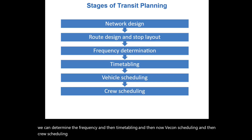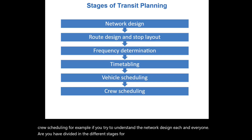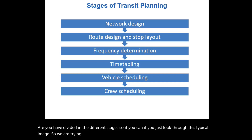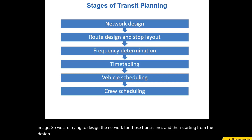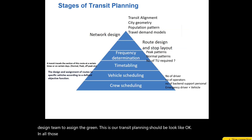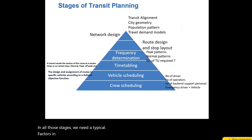For example, if you try to understand the network design, I have divided each stage into different sub-stages. If you look at this typical image, we are trying to design the network for those transit lines, starting from the design and then assigning the grid. This is what our transit planning should look like. In all those stages, we need typical factors, indicators, and parameters to understand.